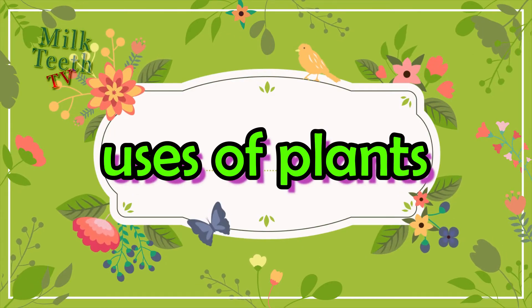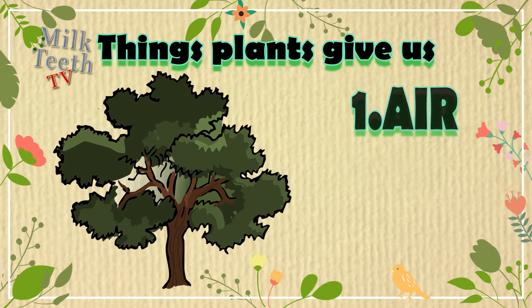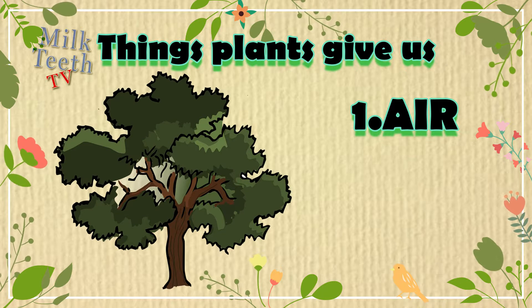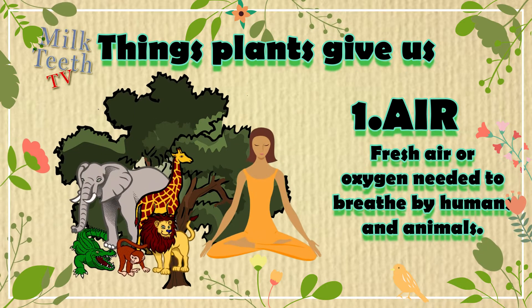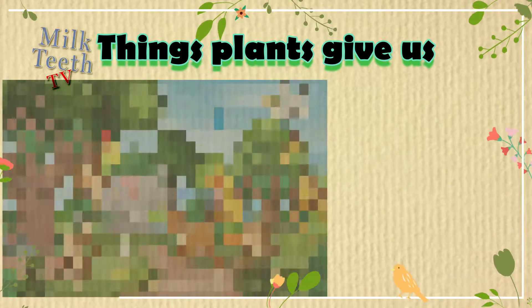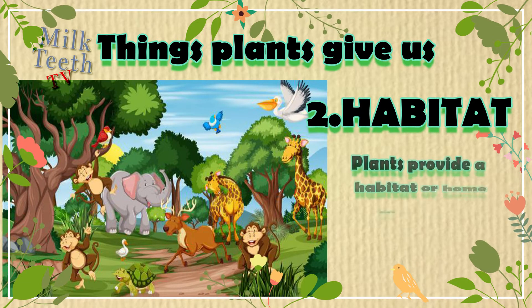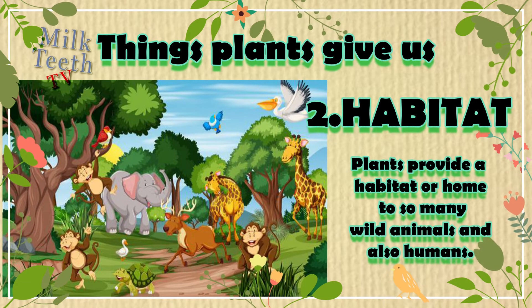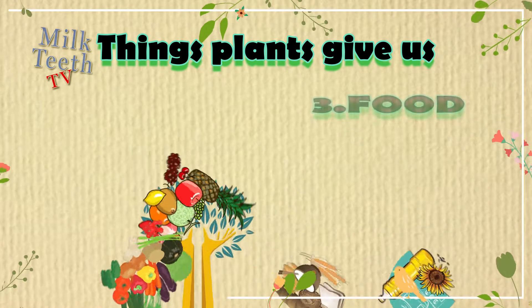Uses of plants — things plants give us. Number one: plants give us fresh air, or oxygen, needed to breathe by humans and animals. Number two: habitat — plants provide a habitat to so many wild animals and also humans.